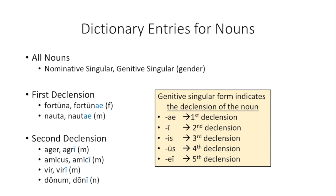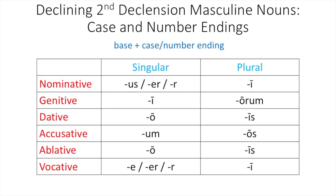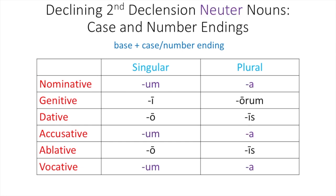Let's look at the endings for our second declension. We've already learned our second declension masculine noun endings. Many of these endings will not change for our second declension neuter nouns. The ones that change are shown in purple. The nominative singular neuter form will be U-M. The genitive form will be an I, just like for masculine nouns. The dative singular will be an O, just like for masculine nouns. The accusative singular form will be U-M, just like masculine nouns. The ablative singular form will be an O, just like for masculine nouns. The vocative singular will be U-M.